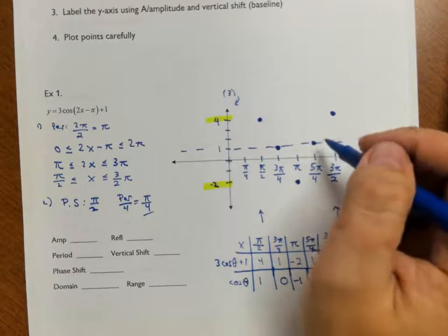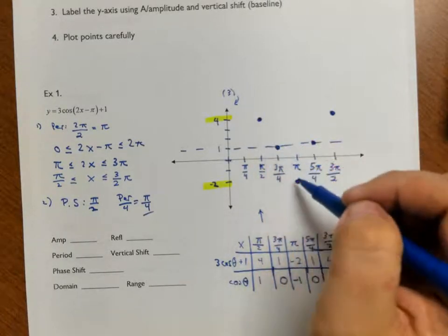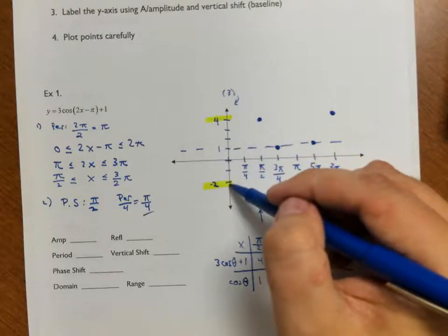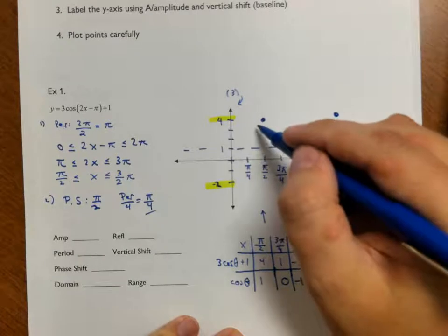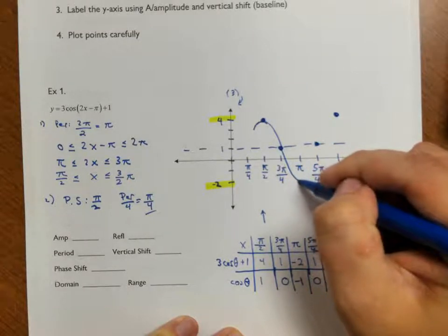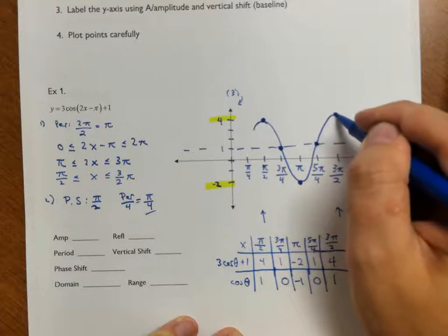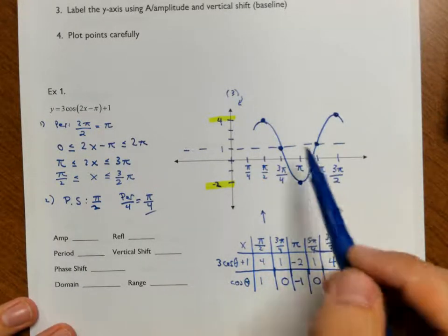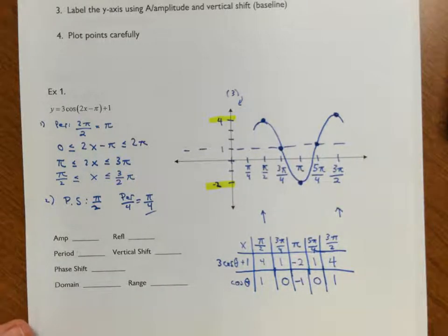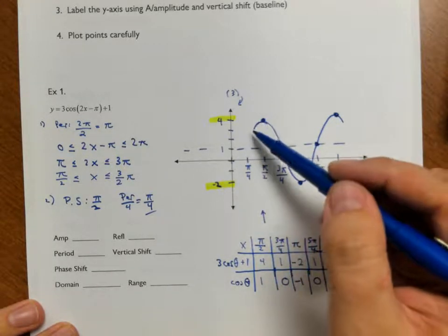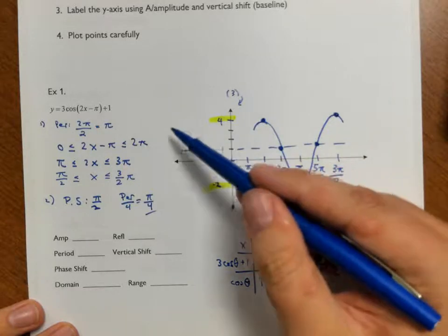If I need more points, I can continue the pattern: high, mid, low, mid, high — then middle, and at zero I'd be at the bottom. Focusing on these key points, I put a nice smooth cosine curve through them. Note that at the top and bottom of the range, the graph turns as it goes through them. Put arrows on the ends if you feel necessary, since the pattern continues beyond what's graphed.